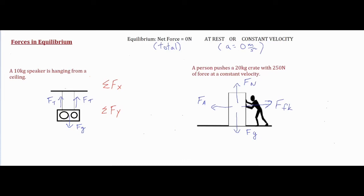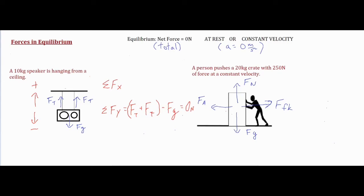If you take a look at our first picture we don't have any forces in the horizontal x direction, so we don't even have to consider that one — all of our forces are in the y direction. I'm going to make sure I'm clear about which direction is positive and negative. It's pretty common that up would be positive and down would be negative. So the sum of all my forces combined are the two Ft's in the positive direction minus Fg in the negative direction, which equals zero newtons. For forces in equilibrium, the sum of forces in both the x and y direction is always going to be zero.